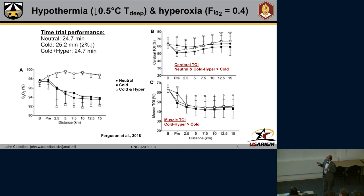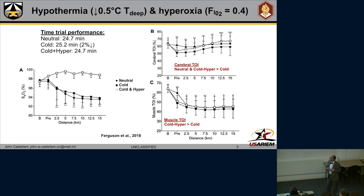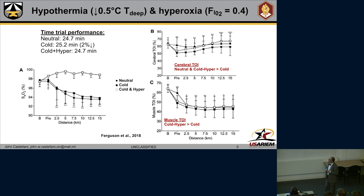Chung, Ferguson, and group looked at time trial performance — a 15-kilometer time trial on a cycle ergometer. During a neutral condition they had a 24.7-minute time trial. When they exercised with a deep body temperature that fell by 0.5 degrees Celsius, they saw about a 2% decrement in physical performance. Interestingly, when they added back hyperoxia at FiO2 of 0.4, it potentially brought back that decrement so it was equal to the neutral or warmer condition. The oxygen saturation during this intense exercise falls over the course of the 15 kilometers, but went up a little when given high oxygen levels.